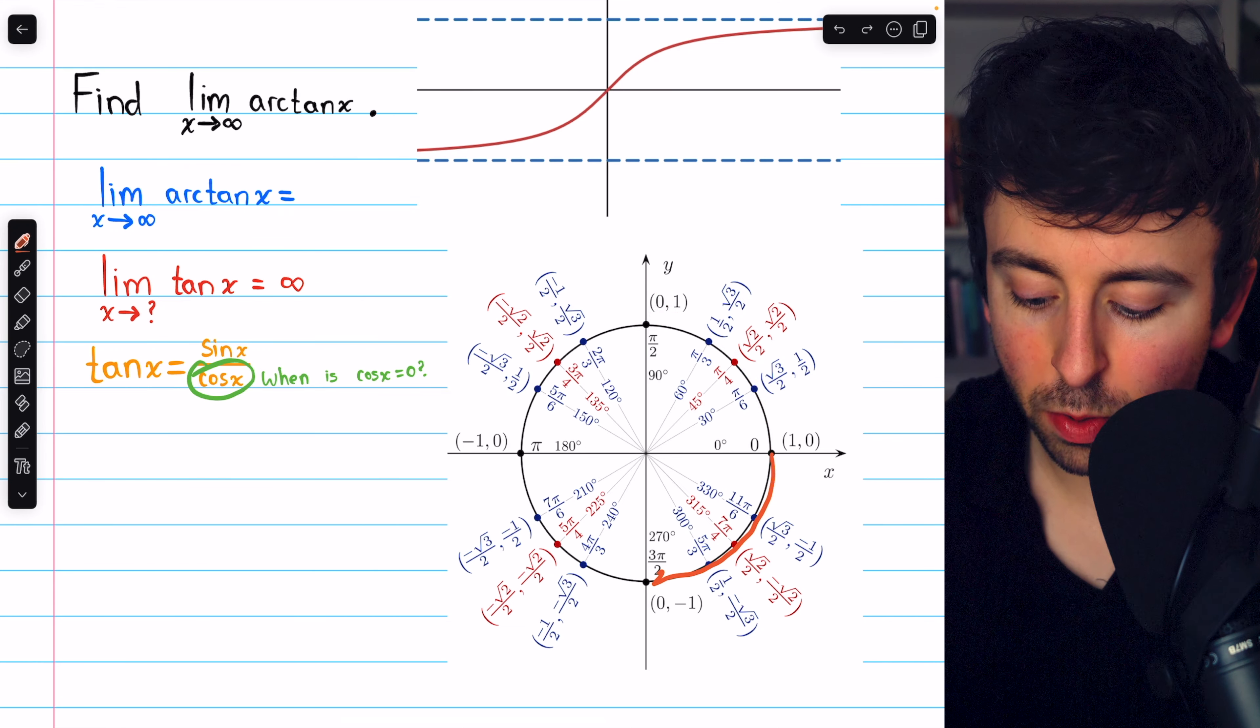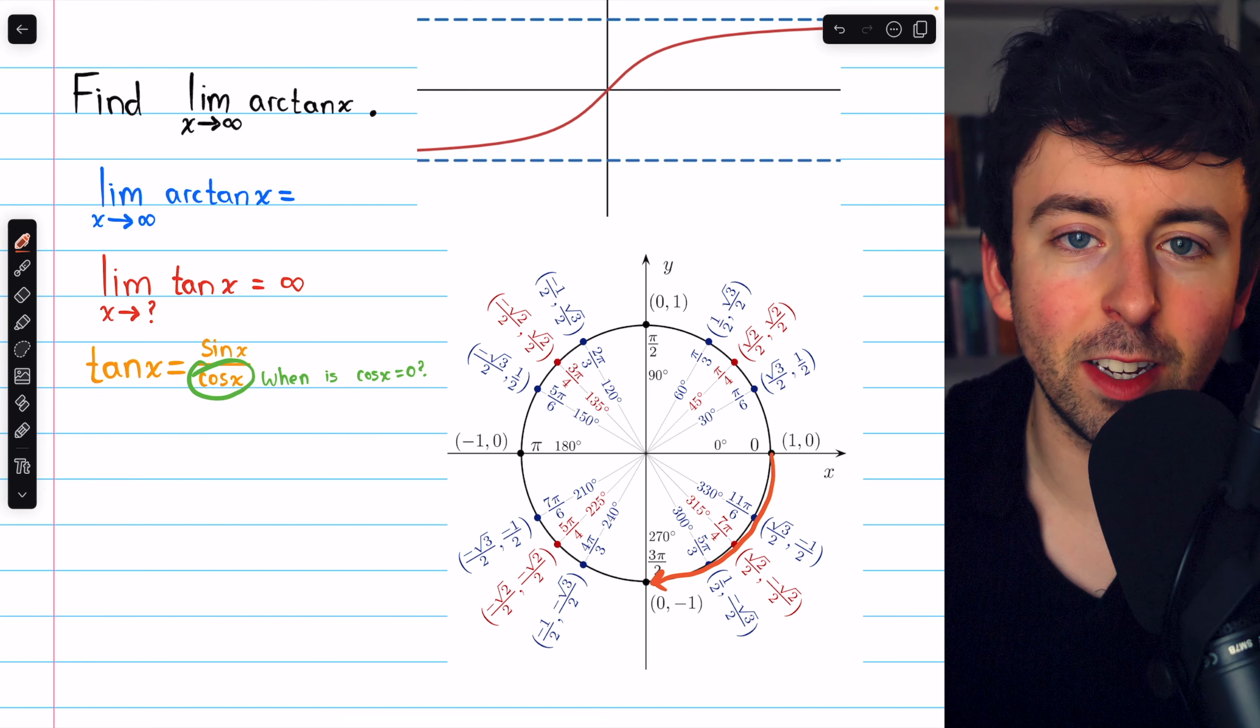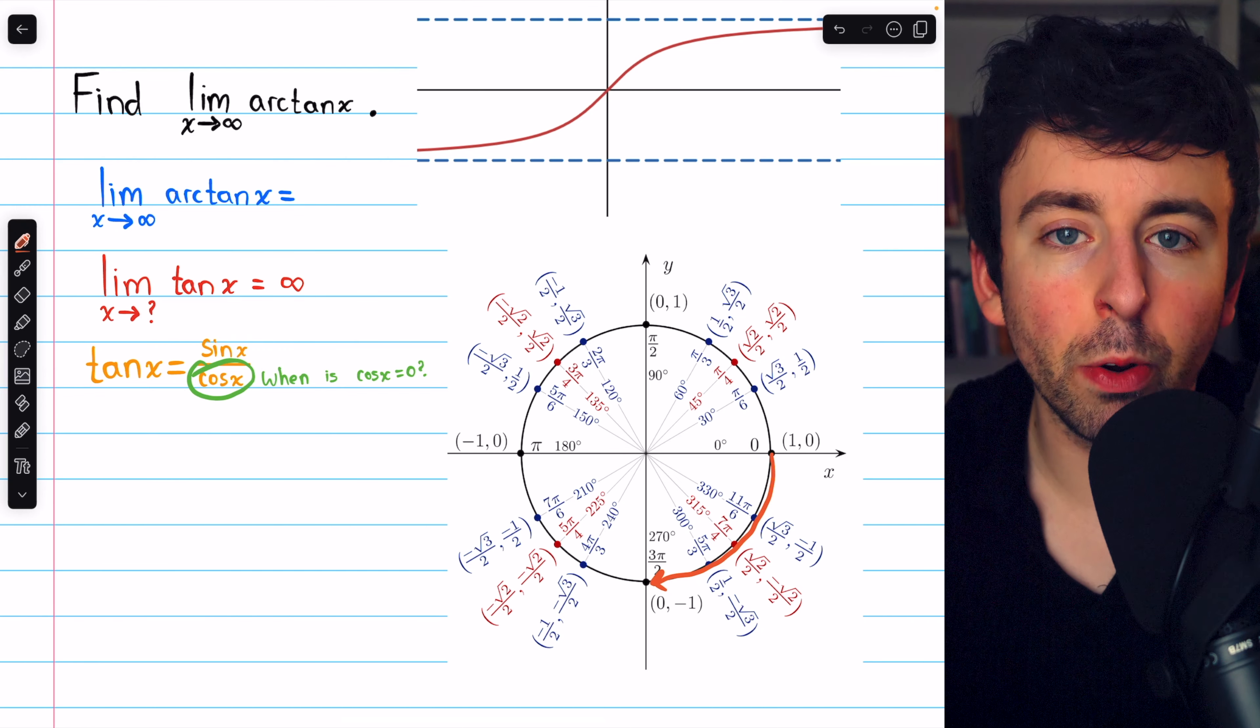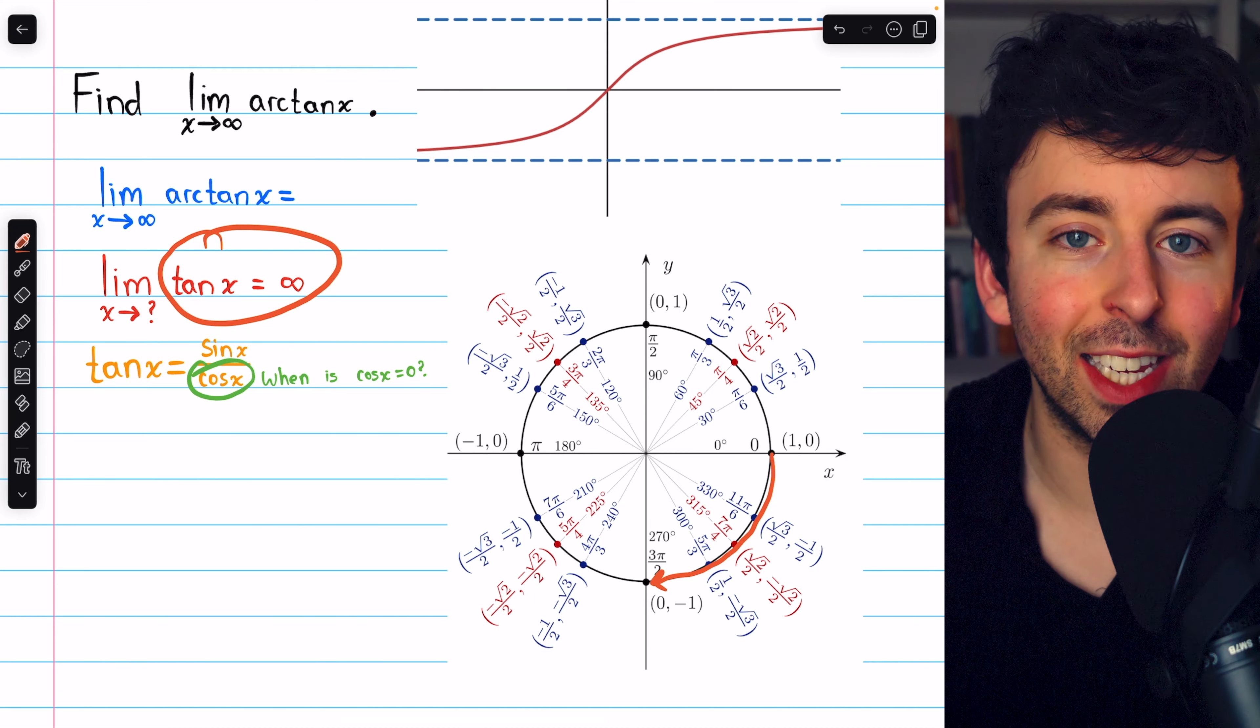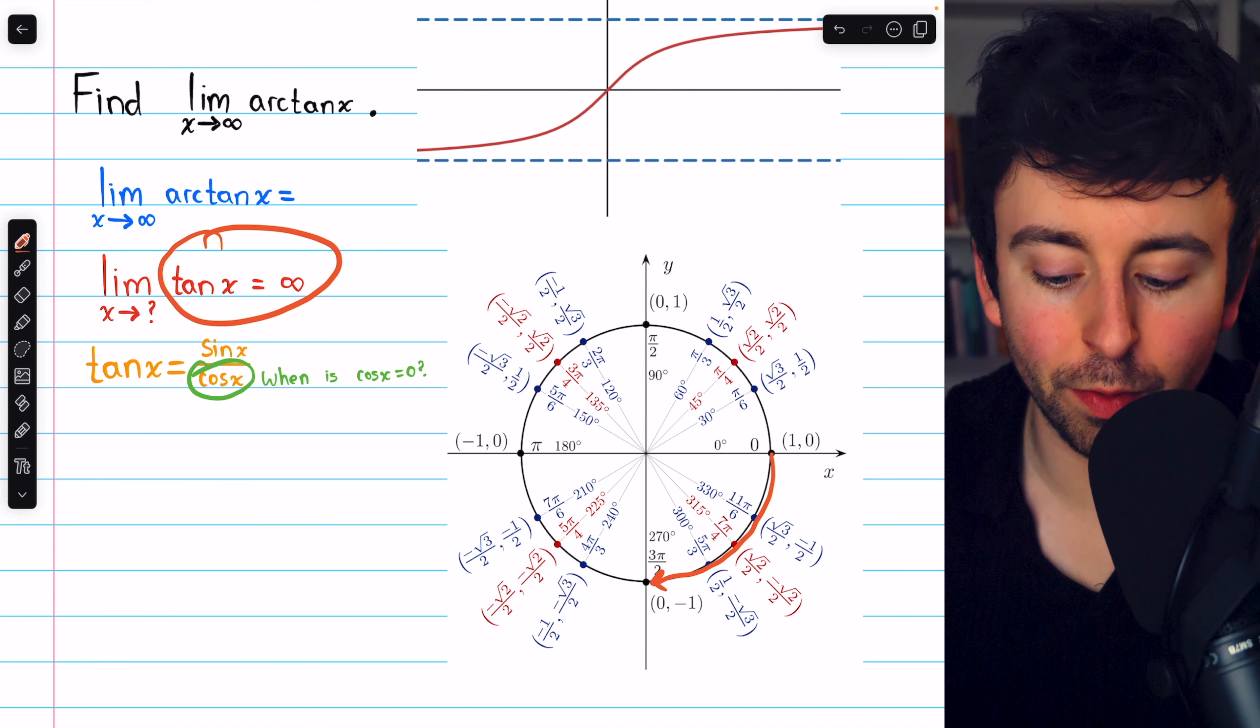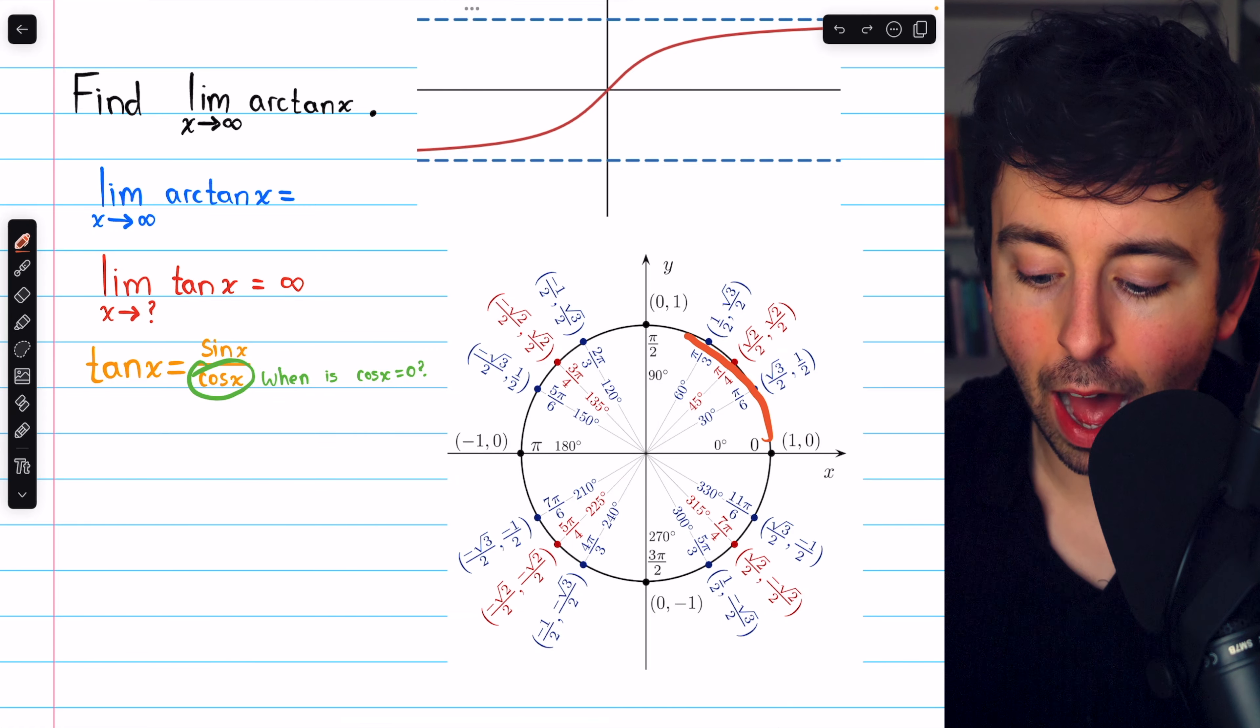Negative pi over two is also in the range of the arctan function, and cosine is zero there. But as x approaches negative pi over two, tangent doesn't go to infinity, tangent goes to negative infinity. So indeed, the value we're looking for is pi over two.